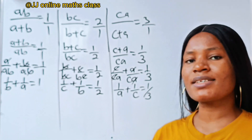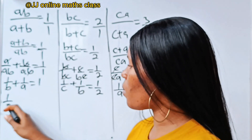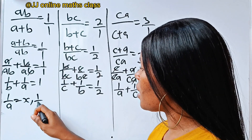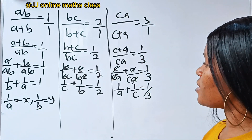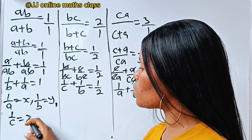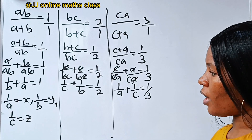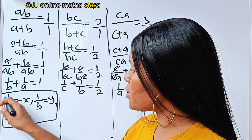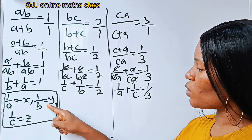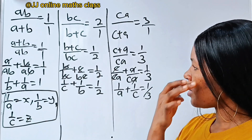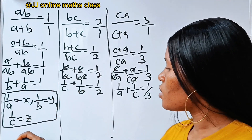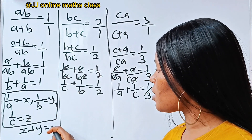Now let's simplify all this by substitution. Let's assign 1 over a to be equal to x, and 1 over b to be equal to y, and 1 over c to be equal to z. Then we can say that 1 over b plus 1 over a, that is y plus x, equals x plus y, is equal to 1.